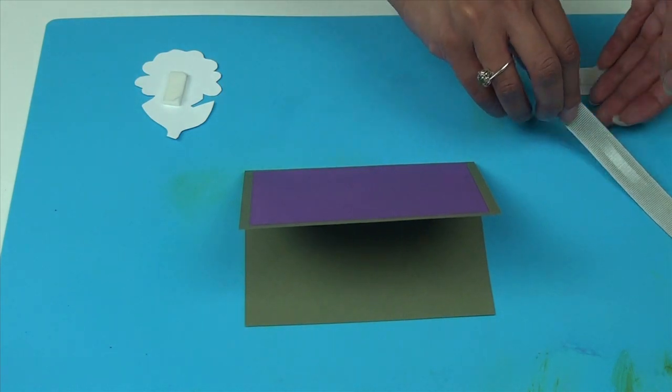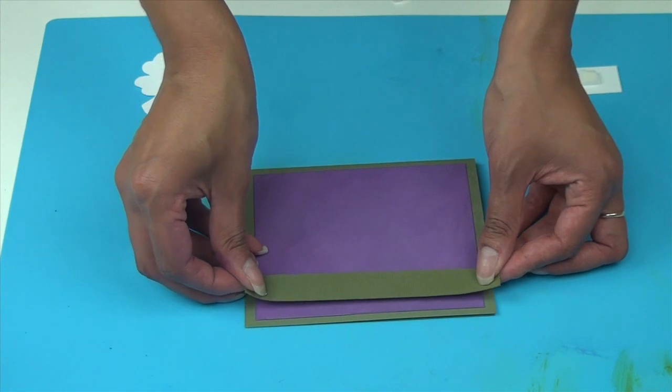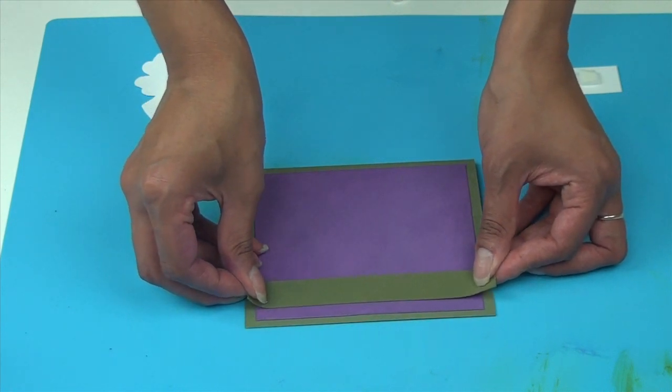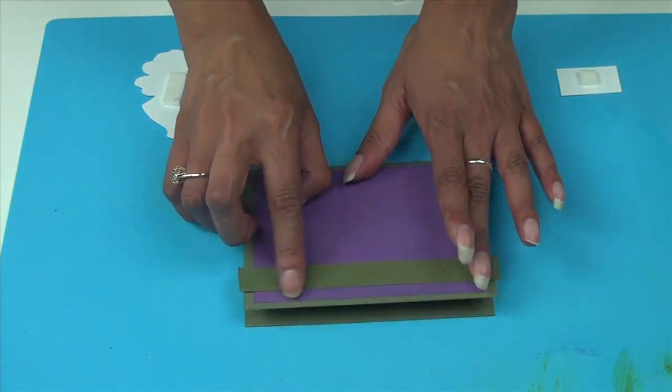Next, I'm going to apply the ribbon. And I'm just going to put that slightly above the edge, the bottom edge of purple cardstock.